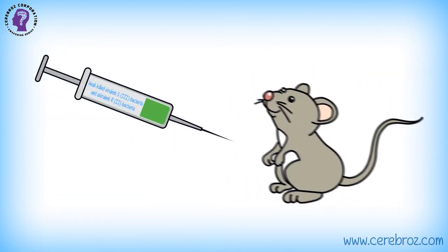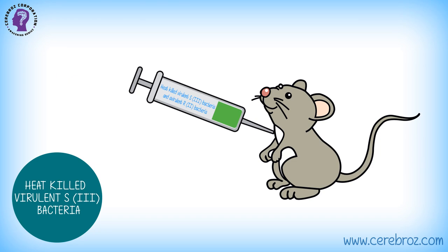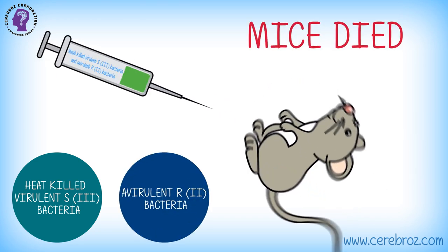But interestingly, when mice were injected with the mixture of heat-killed virulent S3 bacteria and avirulent R2 bacteria, mice died.